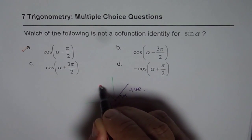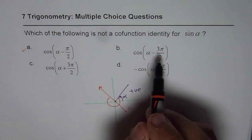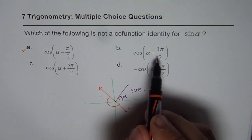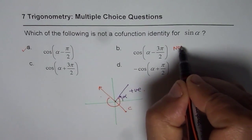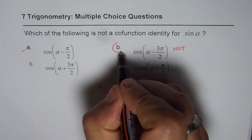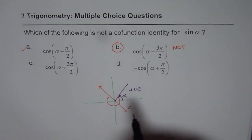So, you land somewhere here, where cos is negative. Since cos is negative, this value will return us a negative value, and therefore, this is not a cofunction identity. So, that could be one of our solutions. Probably, that is the one.